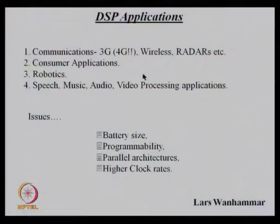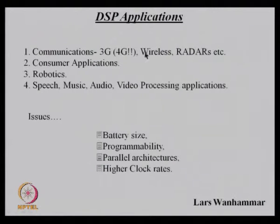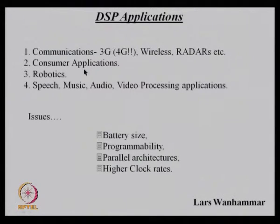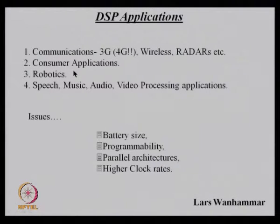The major application requiring large numbers of data path blocks is DSP — digital signal processors — which are becoming the most important elements in most systems. In communications, whether 3G, 4G, wireless, or radar, you require a lot of DSP processing: data processing, voice processing, or video processing. In consumer applications — mobiles, TVs — we need DSP systems. Robotics is another important area for integrated manufacturing, and in video, audio, music, and speech processing, you also require a DSP.